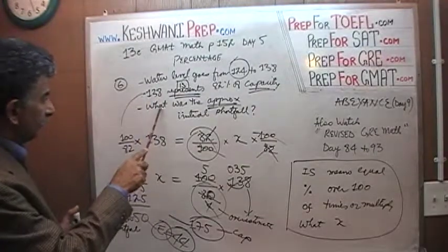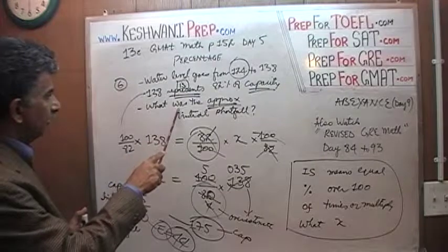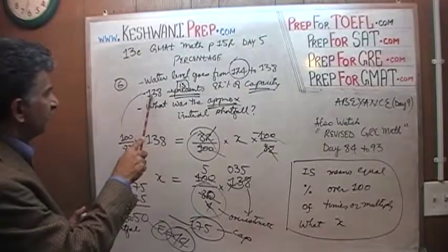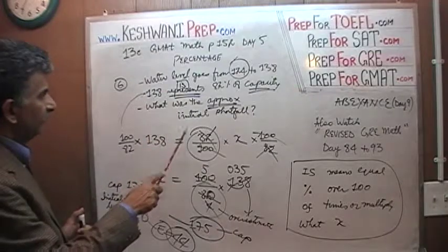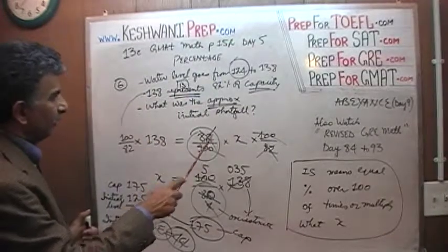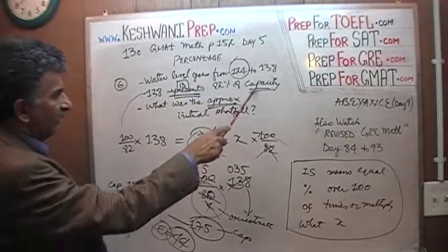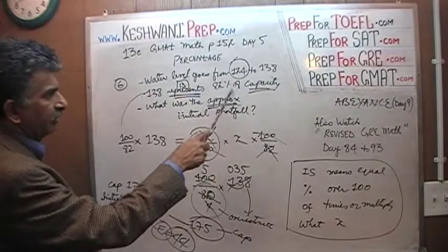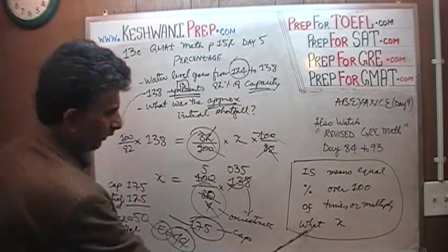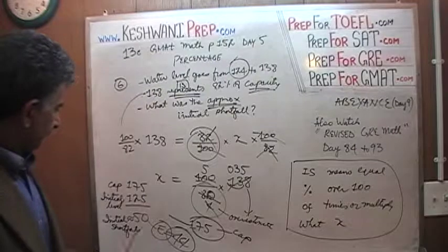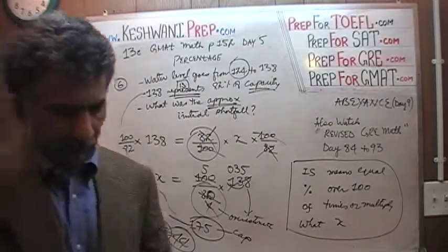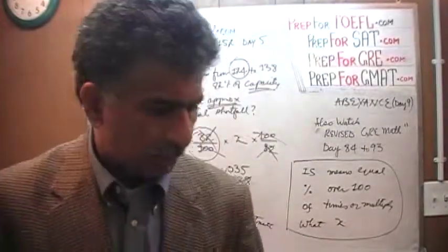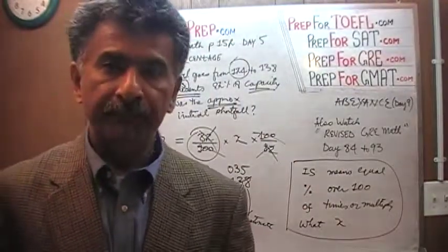What was... 138 represents, which is, is 82% of means times capacity, which is your what? 82% of what? That's your X. That's it. I will see you tomorrow, and we'll just continue chugging along, okay? Bye now.